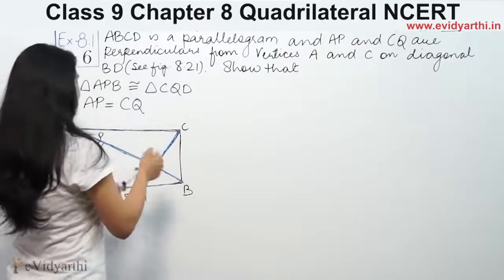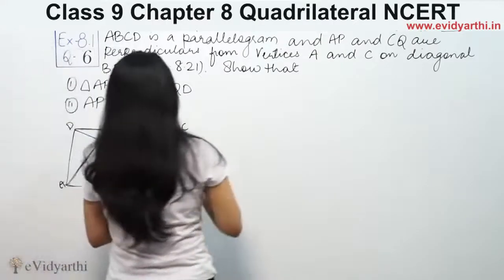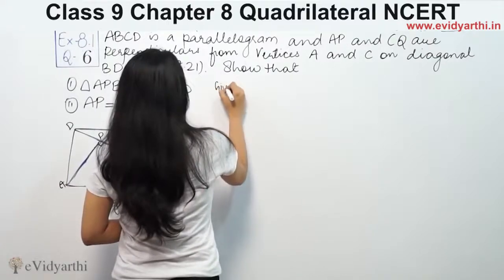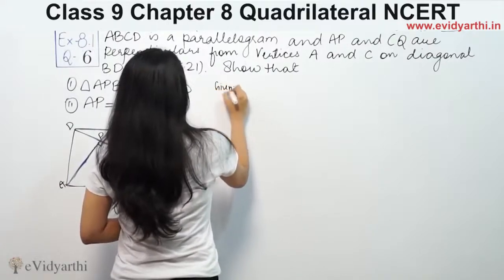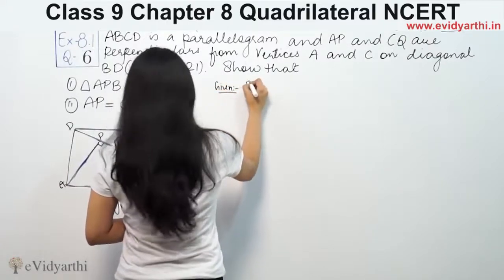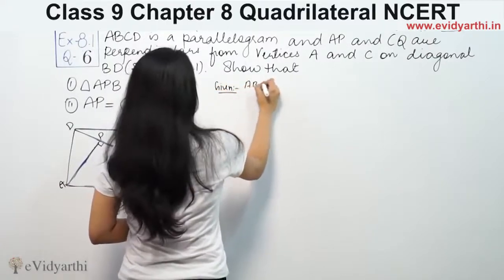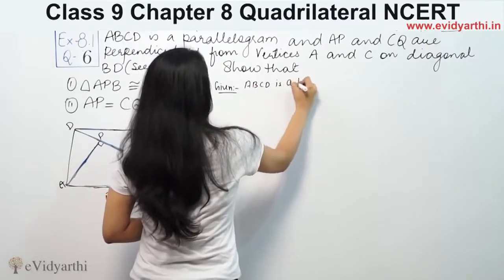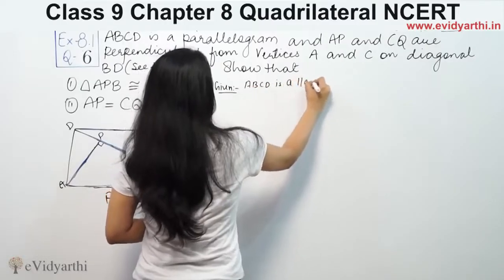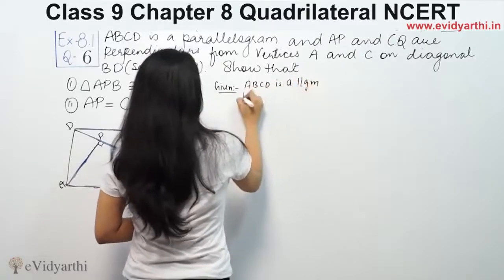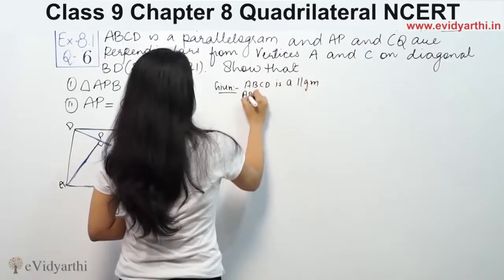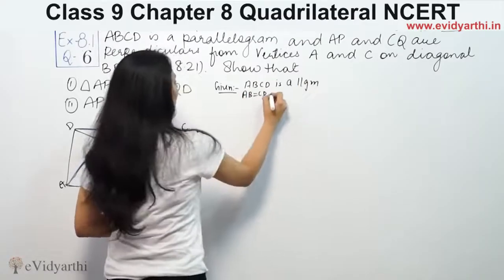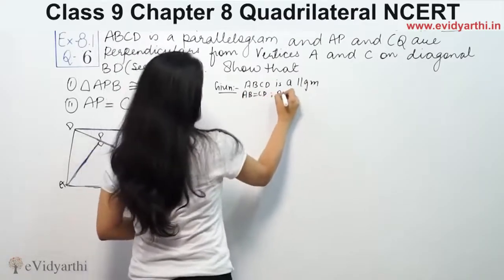First of all, we have to show that APCD is a parallelogram. So it means AB is equal to CD and AB is parallel to CD.